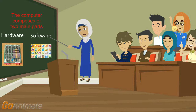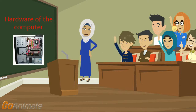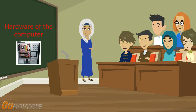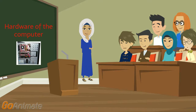The computer is composed of two main parts: hardware and software. The hardware of the computer is the anatomy, physical pieces of the computer, and the mechanical portion.